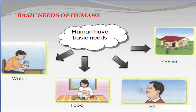Dear children, these are the basic needs of human beings: water, food, air, and shelter. To fulfill these requirements, man is making progress. He wants to lead a more comfortable life and is making progress in each field.